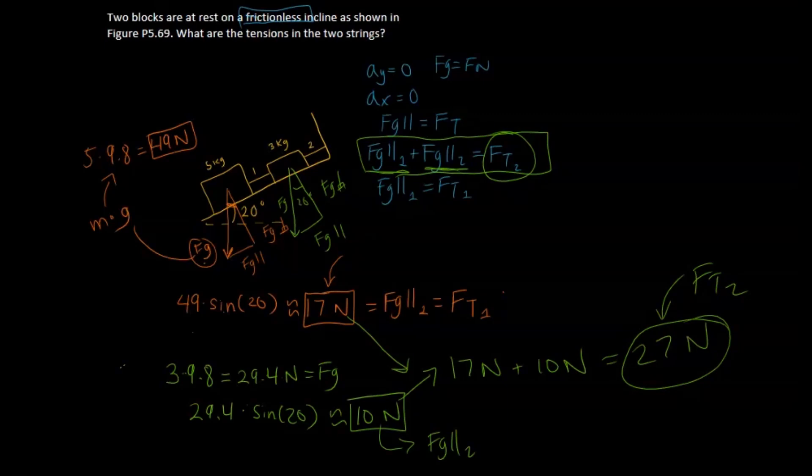And that is our answer for force of tension 2. So the first string had a tension of 17 newtons and the second string had a tension of 27 newtons. That should do it for the video. Hope you guys learned something and drop a comment down below if you have any questions.